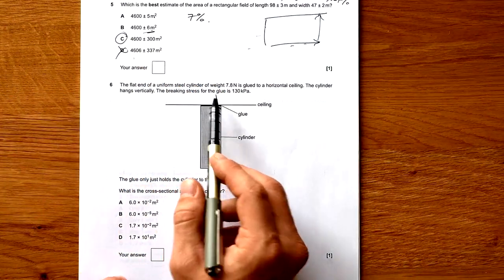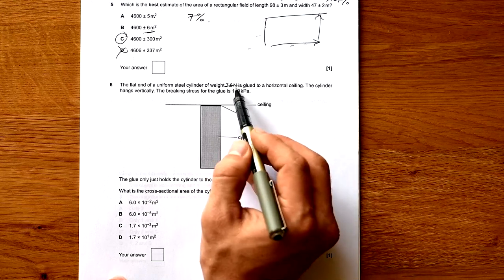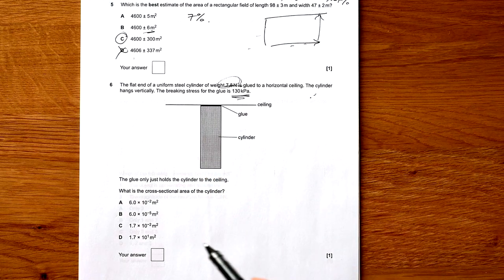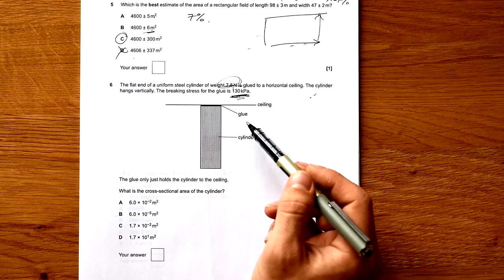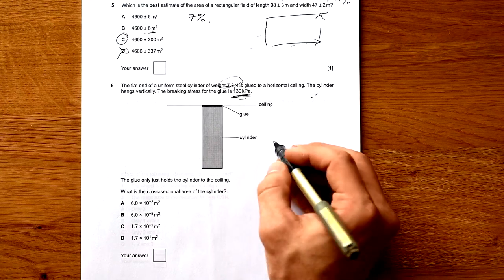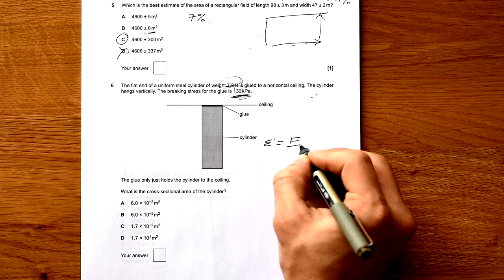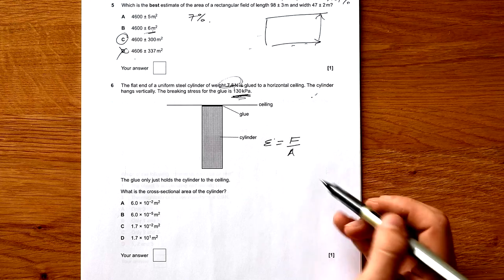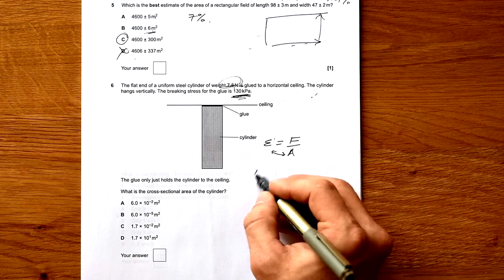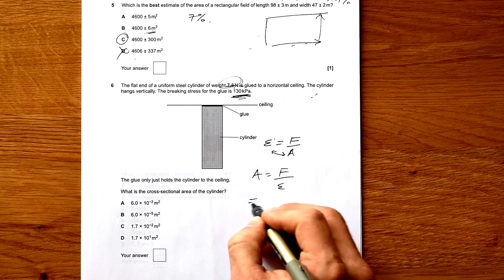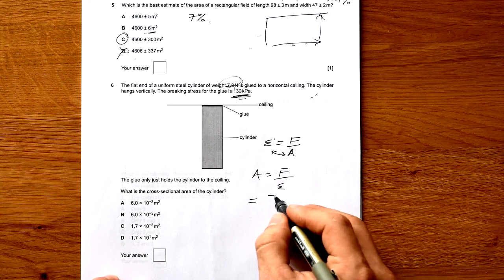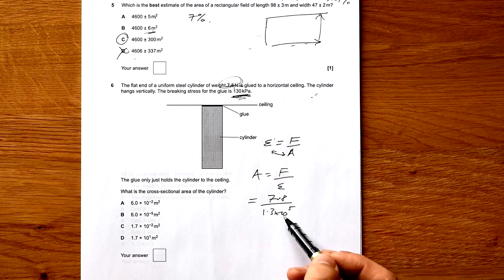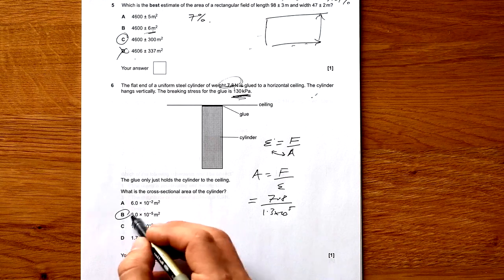The flat end of a uniform steel cylinder of weight W is glued to a horizontal ceiling. The cylinder hangs vertically. The glue only just holds the cylinder to the ceiling. This really isn't complicated because we know that stress is force by area. Pascals is newtons per meter squared. If we have a force and we have a stress we're just trying to find area. Swap over these two and we end up with force by stress. This is going to be 7.8 by 1.3 times 10 to the 5 and I can already see by the powers of 10 that's going to be B.